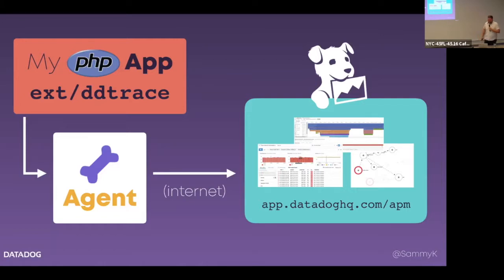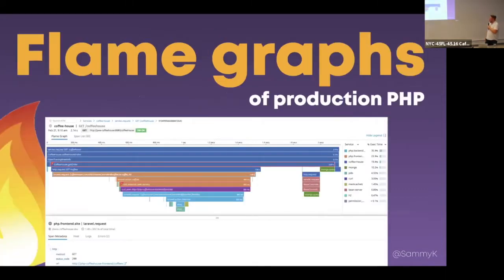The way you do this is just three quick steps: sign up at datadog.com — no credit card required, there's a free trial to just try things out. You install the agent, install the extension, and then when you restart your PHP SAPI, you'll start seeing traces in the UI and you'll get beautiful flame graphs of your production PHP, which is really handy when things go wrong.